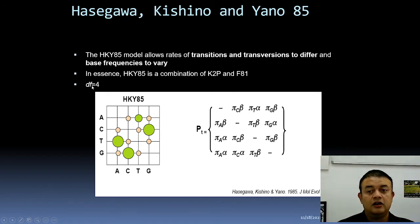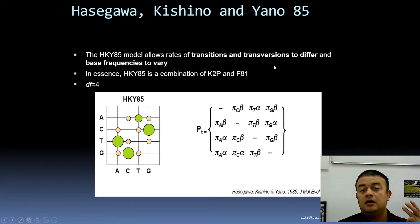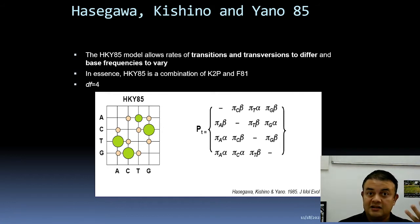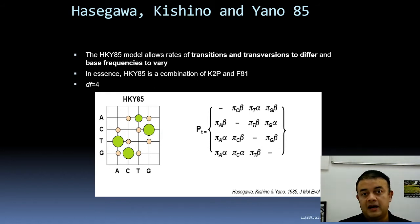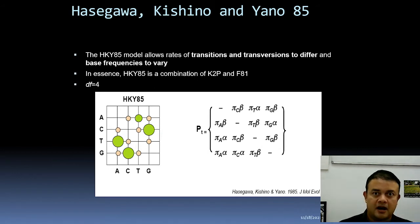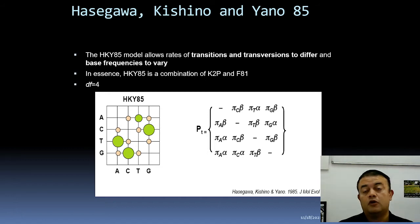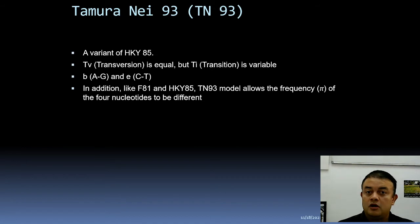In HKY85, the degree of freedom is four: three comes from the nucleotide base frequencies (four bases minus one), and one comes from the Ti/Tv ratio kappa. So one plus three equals four degrees of freedom for the HKY model.